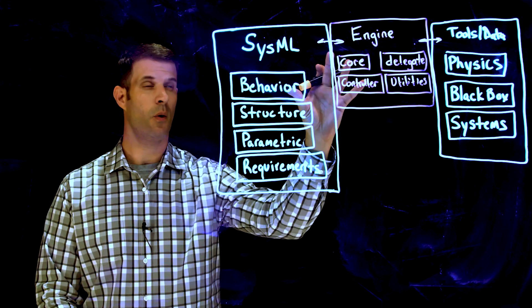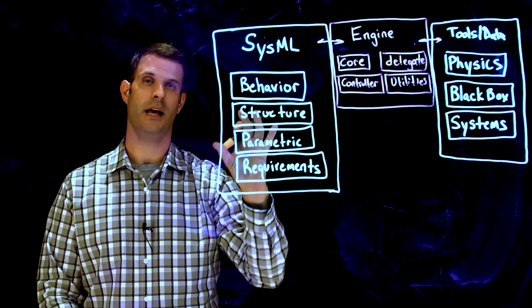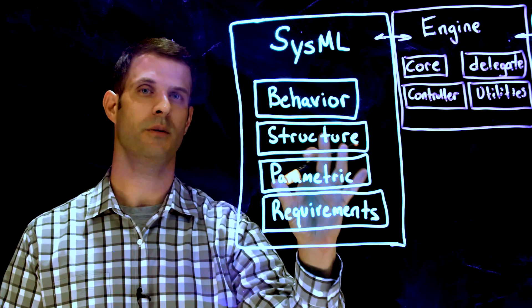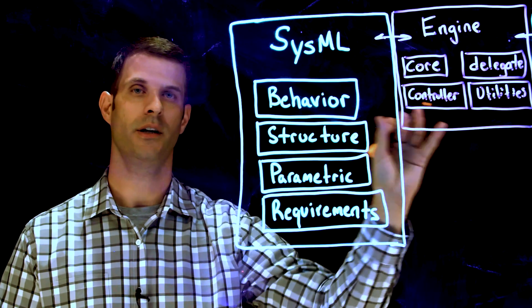This infrastructure needs a set of core models and stereotypes that allow you to describe all the elements from your system architecture that you want to have included in your behavior simulation.